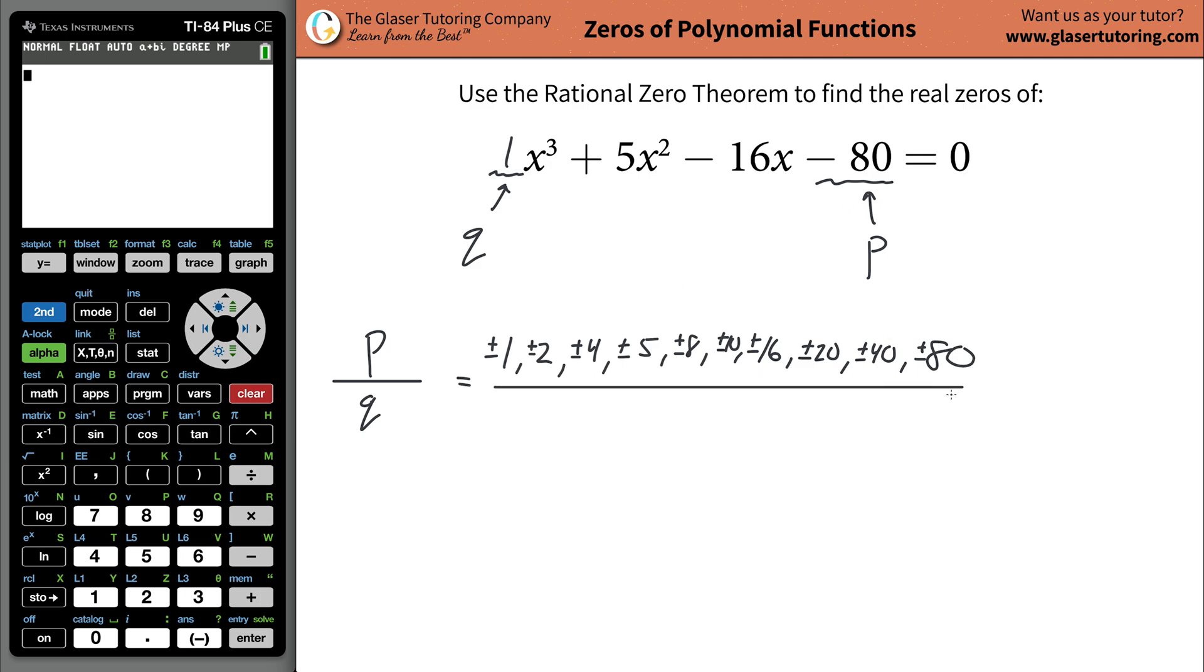Then you're going to list the factors of your leading coefficient, which is just a plus and minus one.